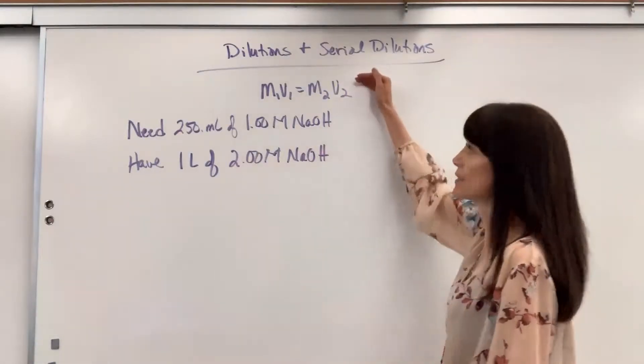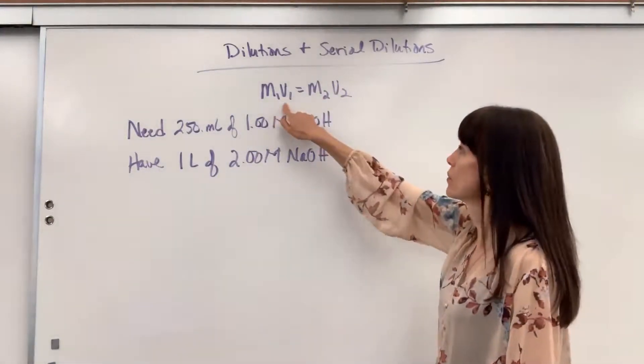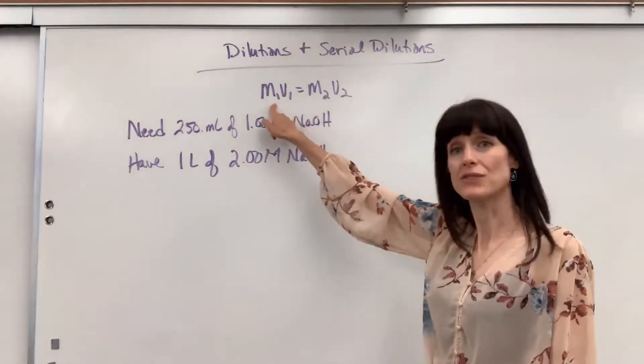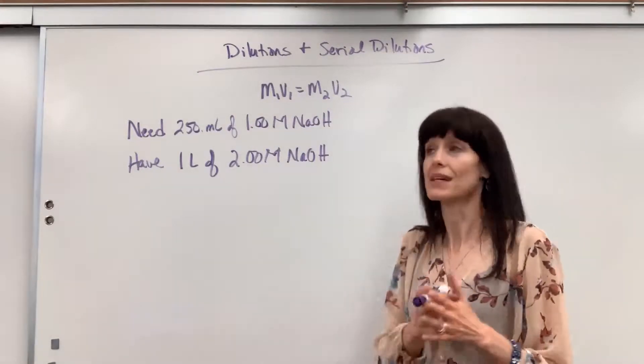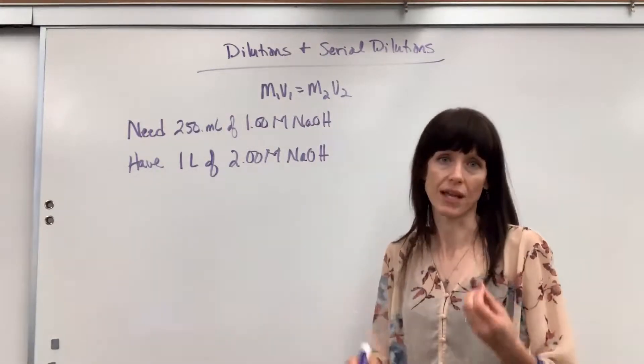It's the dilution formula. Here it is: M1V1 equals M2V2. M stands for molarity, V stands for volume. Your key is simply labeling. That's the hardest thing on this, is just to label.